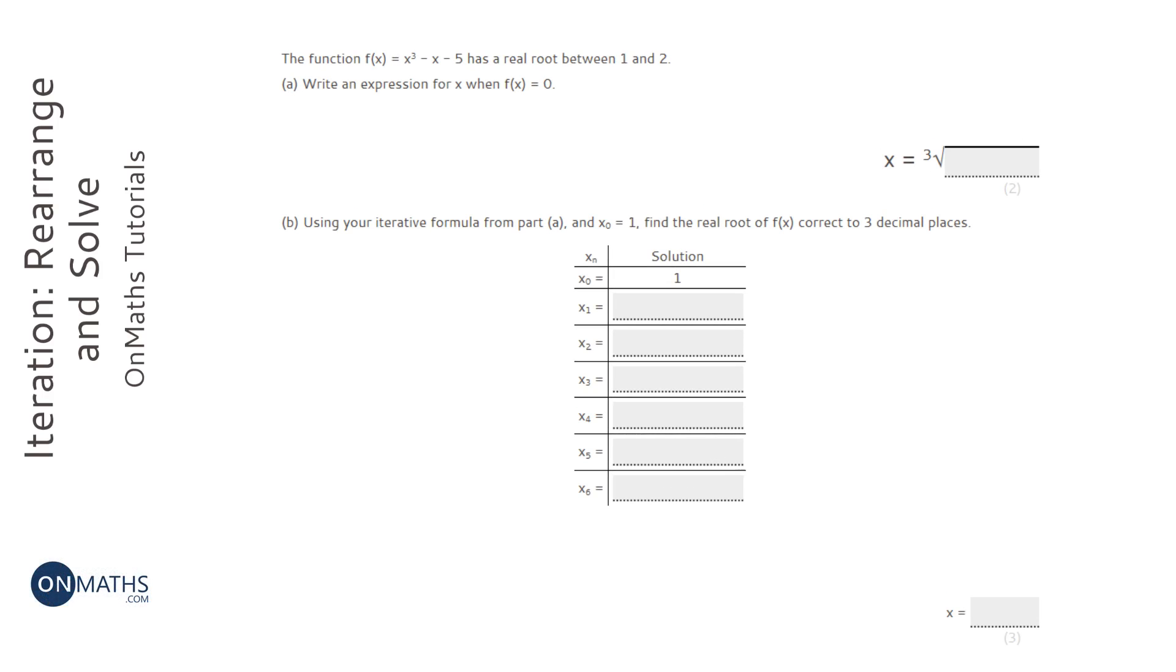This is a question about iteration, and question A is a little bit harder than the exam will typically go, where it asks you to come up with your own iteration formula. In order to do this, it says that f(x) equals 0 for this formula. So the first step is just to get it equal to 0.